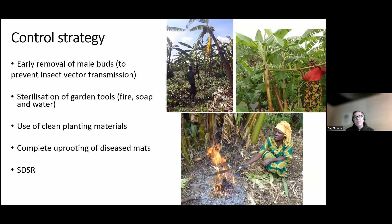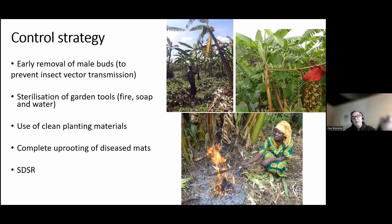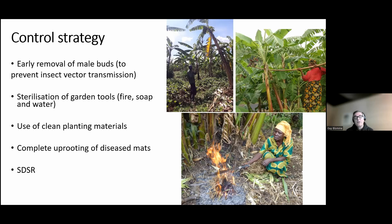For the control strategy: when the disease arrived in Uganda and Eastern Congo about 20 years ago, control methods known for Moko disease in Asia or blood disease in Asia were applied in Central and Eastern Africa to control Xanthomonas wilt. For example, early removal of male buds using a forked wooden stick, sterilization of garden tools, the use of clean planting material, and complete uprooting of diseased mats were applied. Quite a bit of research was done on these various control strategies, and they all proved to work quite well for Xanthomonas.